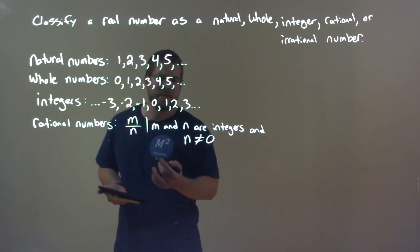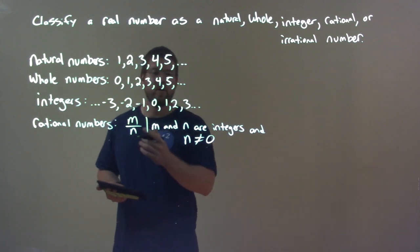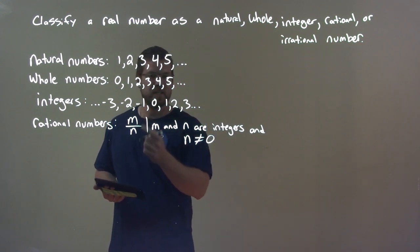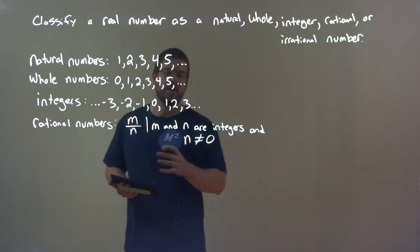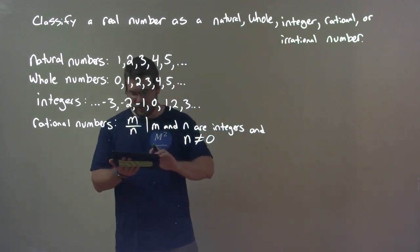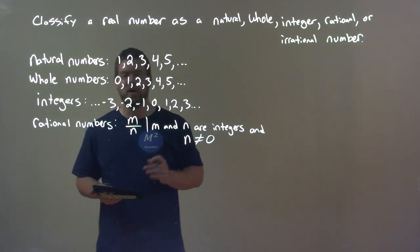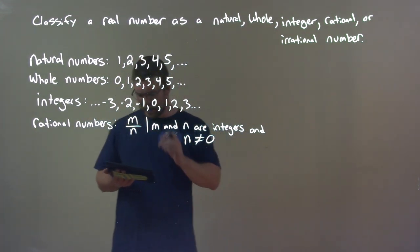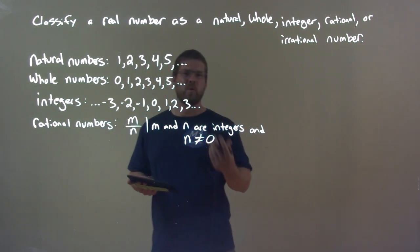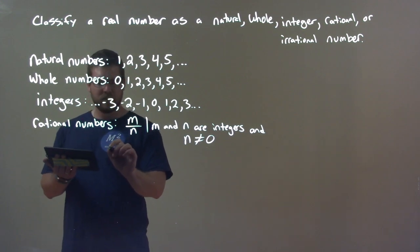For example, if I wanted to make zero as a rational number, zero over five qualifies — m being zero, n being five. We cannot divide by zero; it's undefined. We see rational numbers a lot as decimals — they have either a terminating decimal or a repeating decimal. Those are two things we want to note.